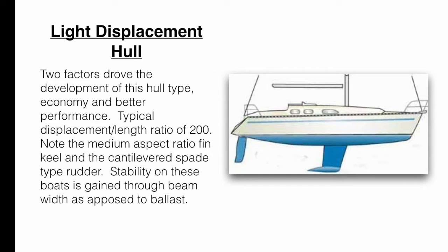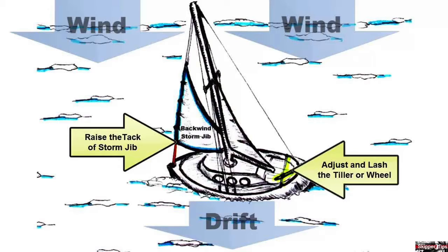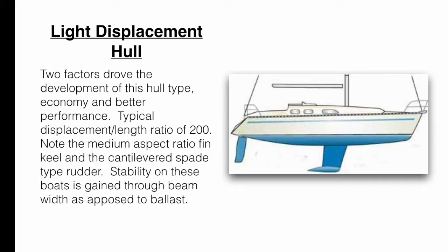And that is that heavy displacement and medium displacement hulls, one of their distinct advantages is that they heave to very, very well. Now that is not to say that a light displacement hull cannot heave to because they can. However, because the heavy displacement hulls have that very long, very deep keel that goes from the bow to the stern, it creates a very large slick.